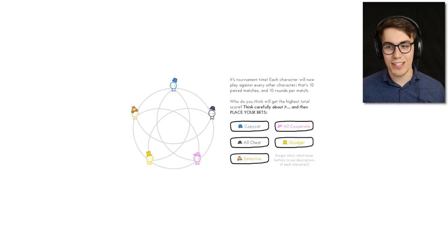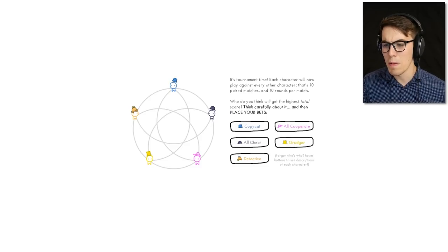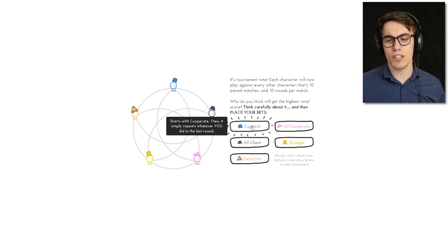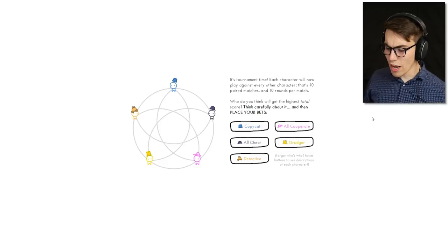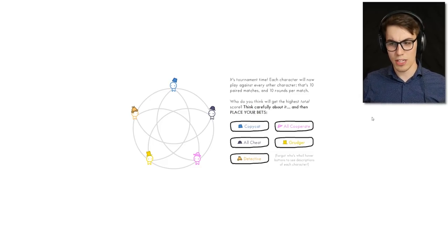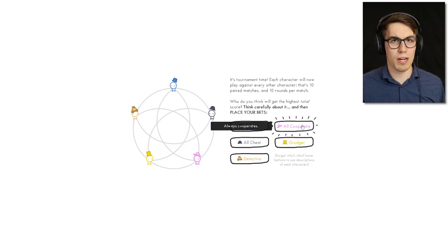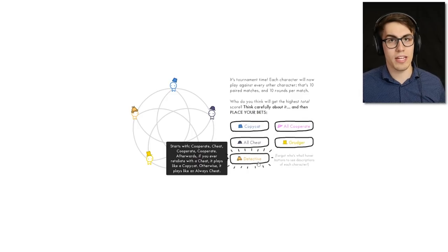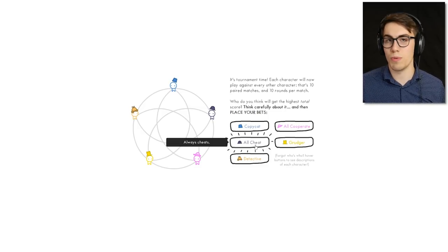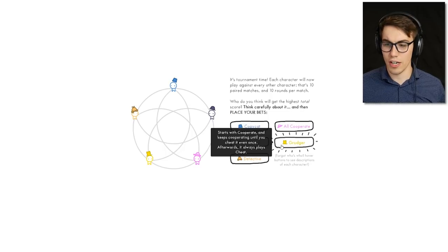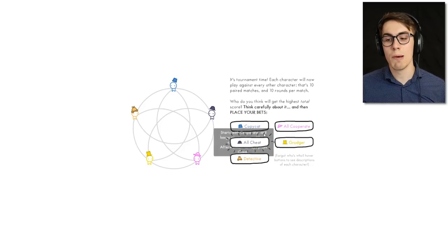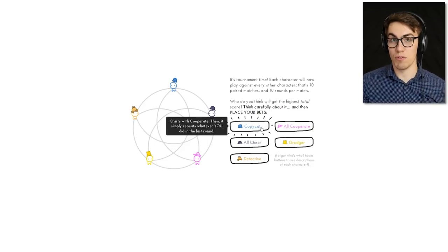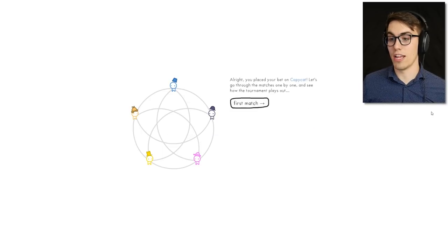Each character will now play against every other character — ten paired matches, ten rounds per match. Who do you think will get the highest total score? I'm going to bet on Copycat. Copycat is going to do the best because they start with cooperate and if you screw them they'll screw you back until you're even. The Copycat will stop cheating if you start cooperating again, so copycat is going to win. All right, I've placed my bet on Copycat.